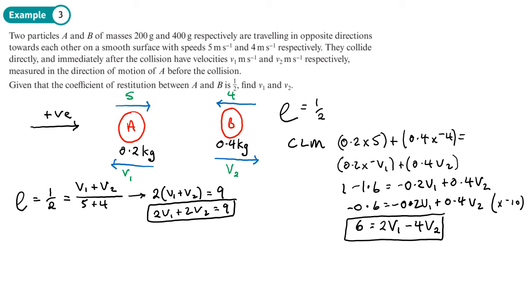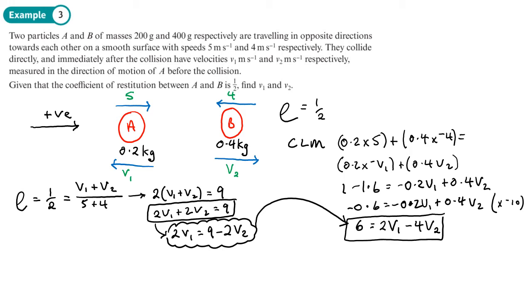Making 2 v1 the subject of equation two: 2 v1 equals 9 minus 2 v2. Substituting into equation one: 6 equals (9 minus 2 v2) minus 4 v2. That gives 6 equals 9 minus 6 v2, so subtracting 9 from both sides gives negative 3 equals negative 6 v2, meaning v2 equals one half.